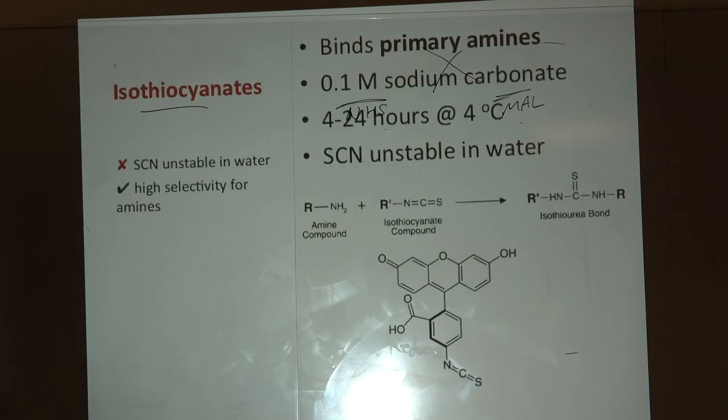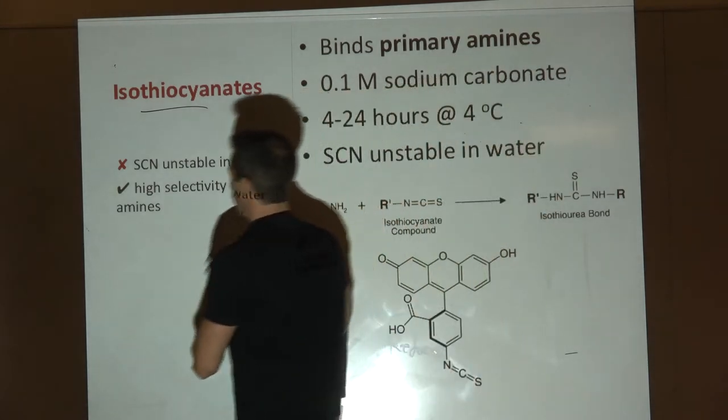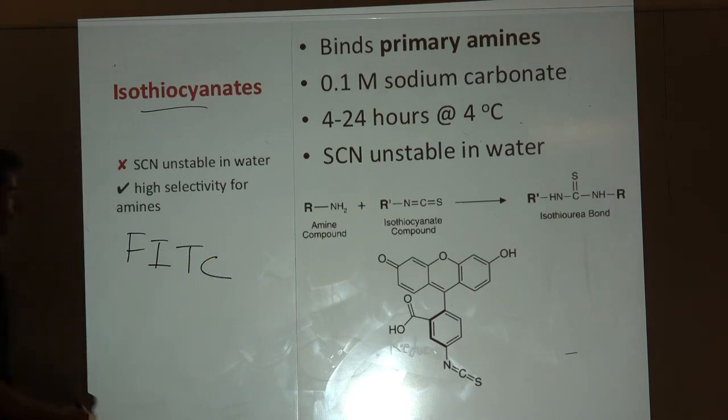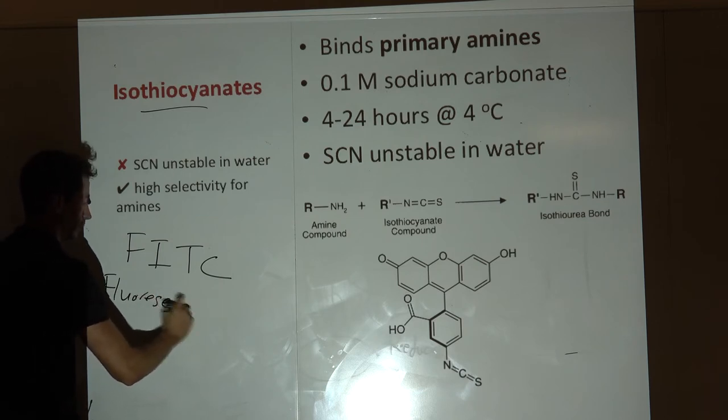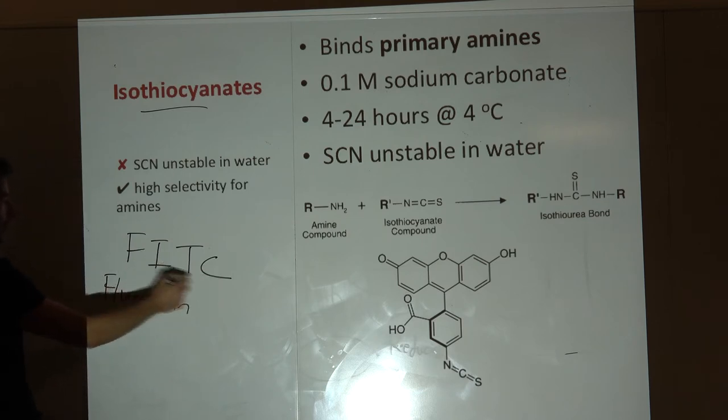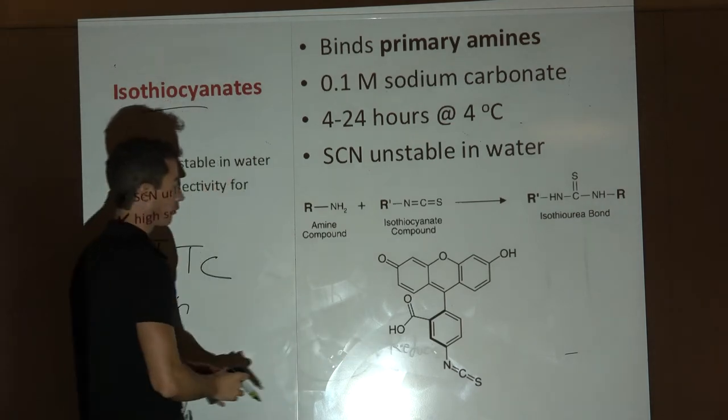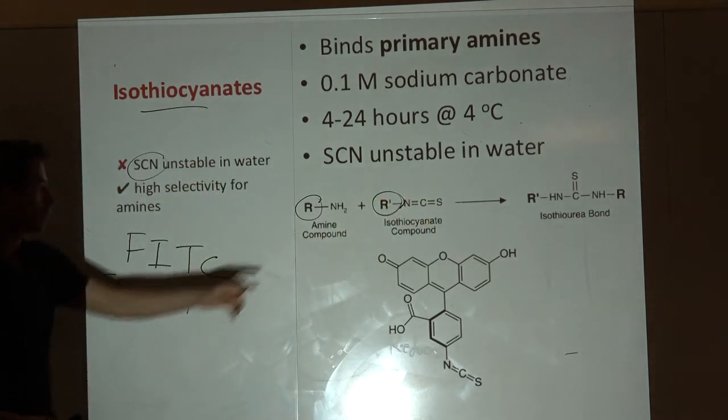Isothiocyanates - you've probably heard of FITC, fluorescein isothiocyanate. This SCN group is relatively unstable in water but has high selectivity for amines. Here we're going from an R group to an R prime, linking them via this SCN group.